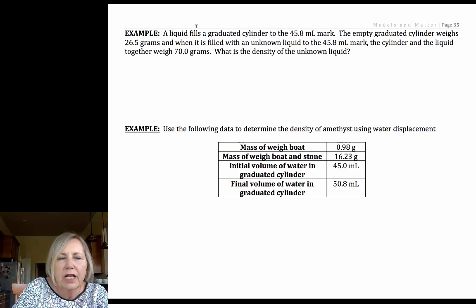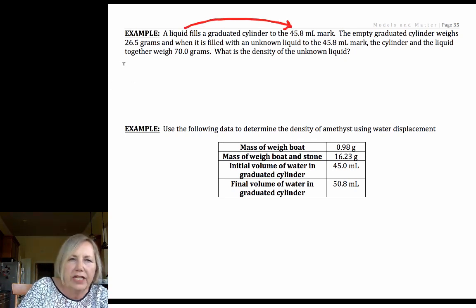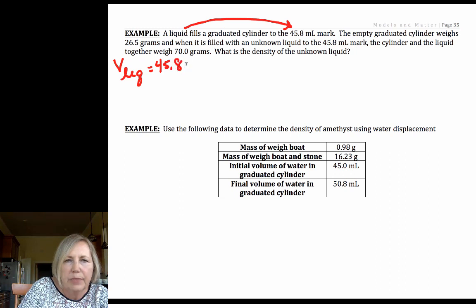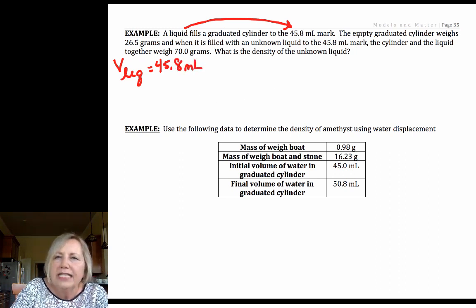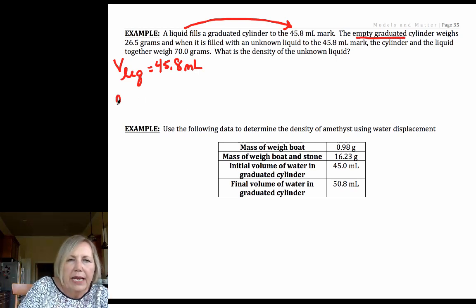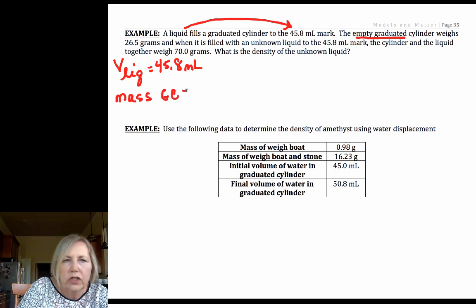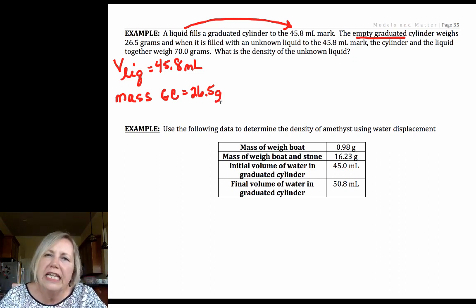When you see that a liquid fills a graduated cylinder to the 45.8, let's list our givens. That tells me that the volume of my liquid is equal to 45.8 milliliters. Now they tell me the empty graduated cylinder weighs, so that says my mass of my graduated cylinder is 26.5 grams. So read your question in fragments. As soon as information is given, list it under your givens.